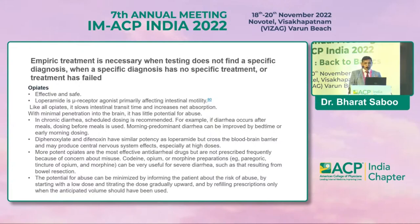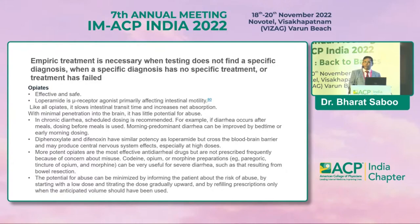For example, if diarrhea occurs after meals, pre-meal dosing is used; for morning-predominant diarrhea, the dose should be given at bedtime. More potent opiates are not used due to abuse potential. Abuse risk can be minimized by informing the patient about risks, starting with a low dose and titrating gradually upward, and refilling prescriptions only when the anticipated volume should have been used.